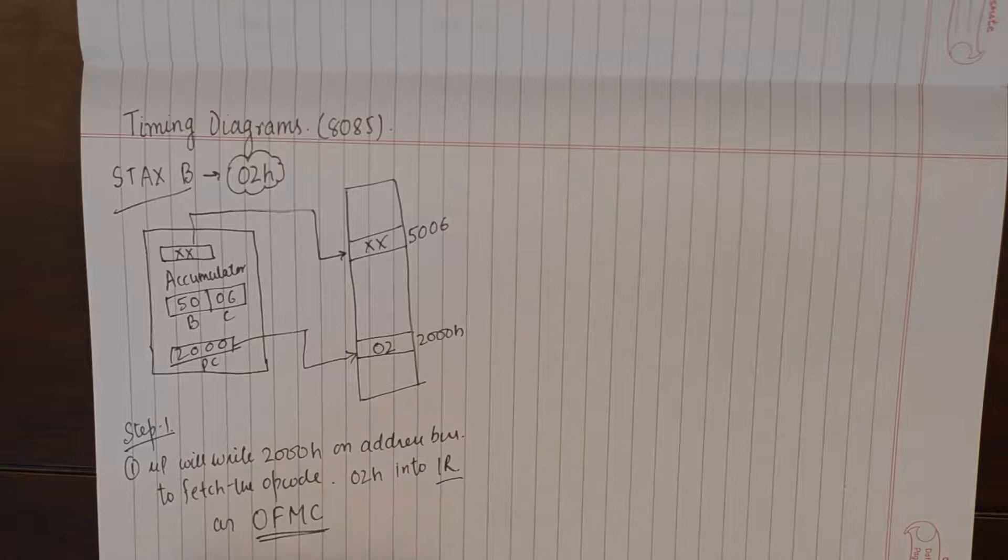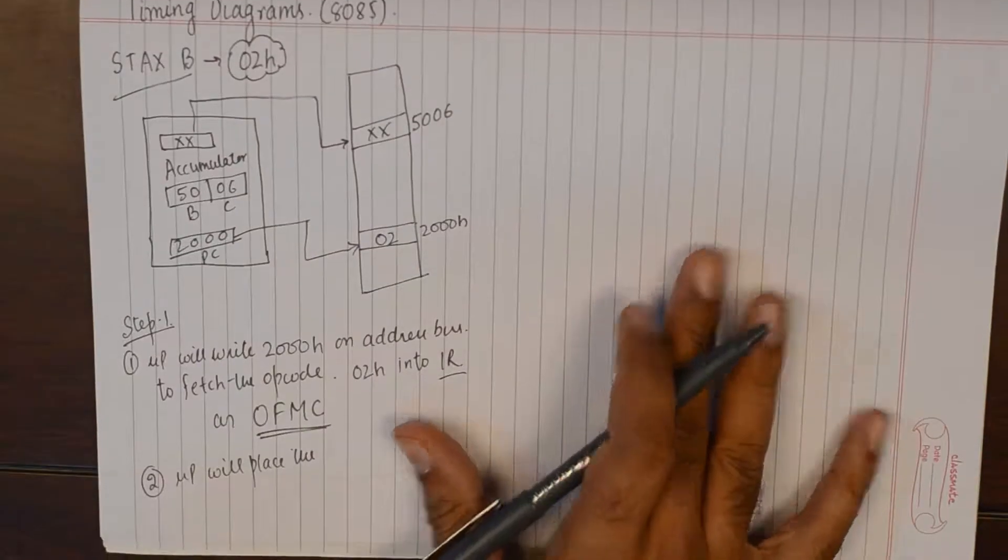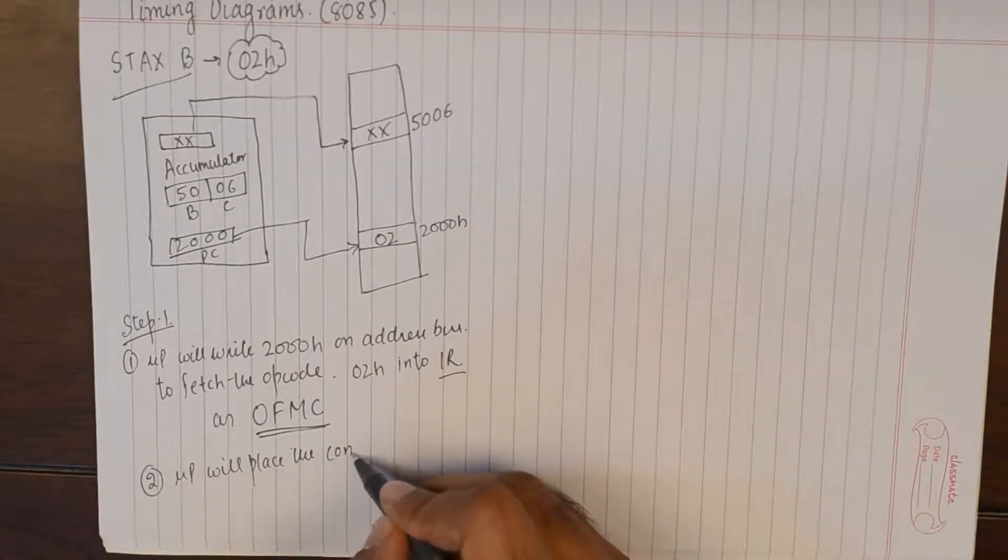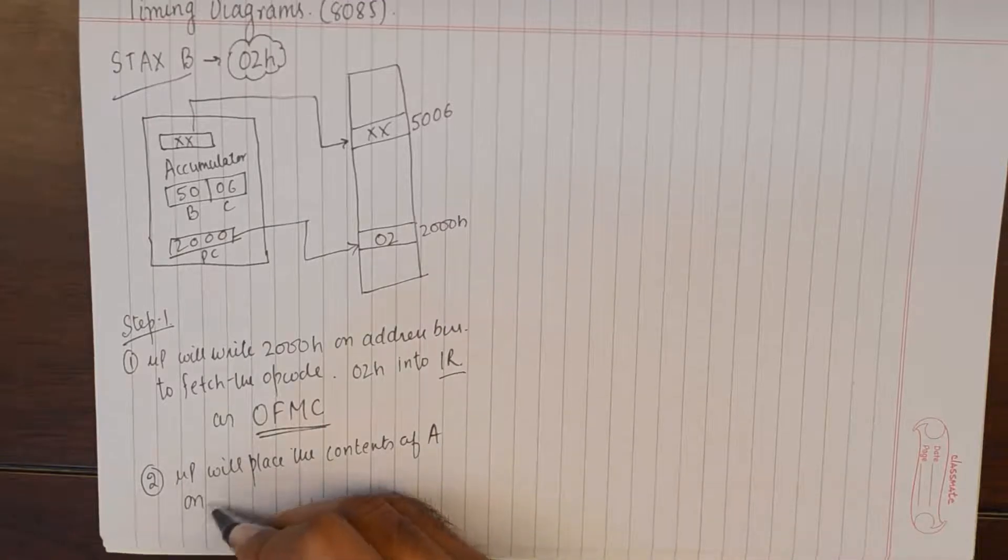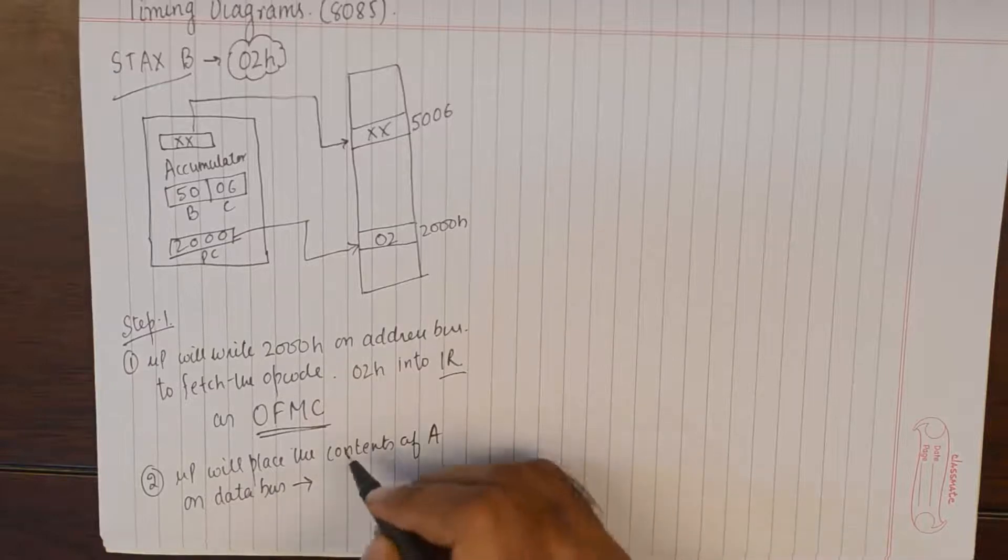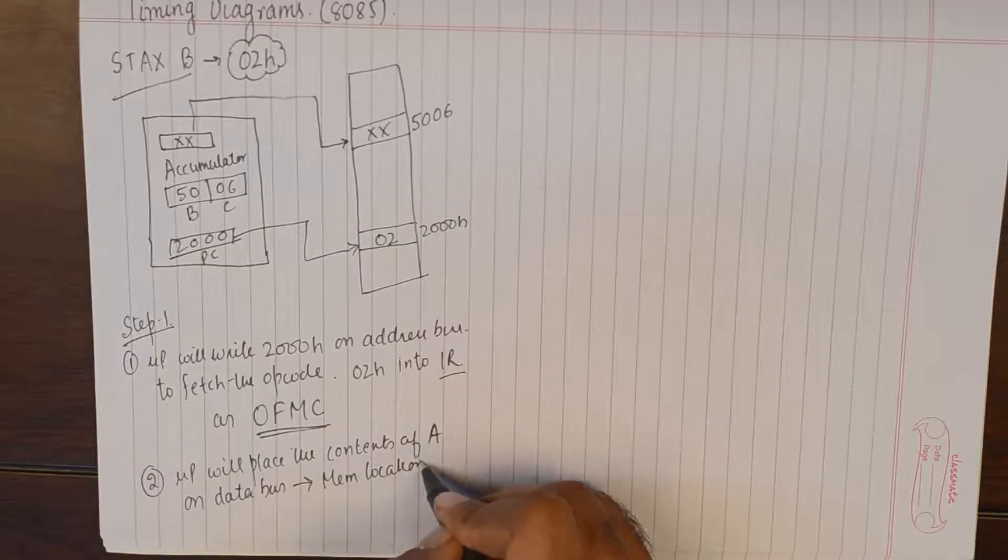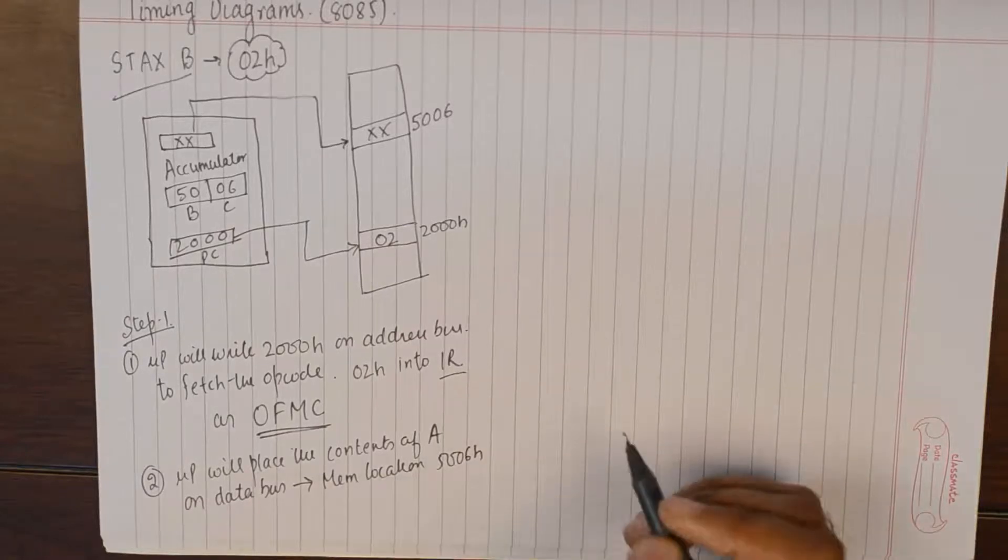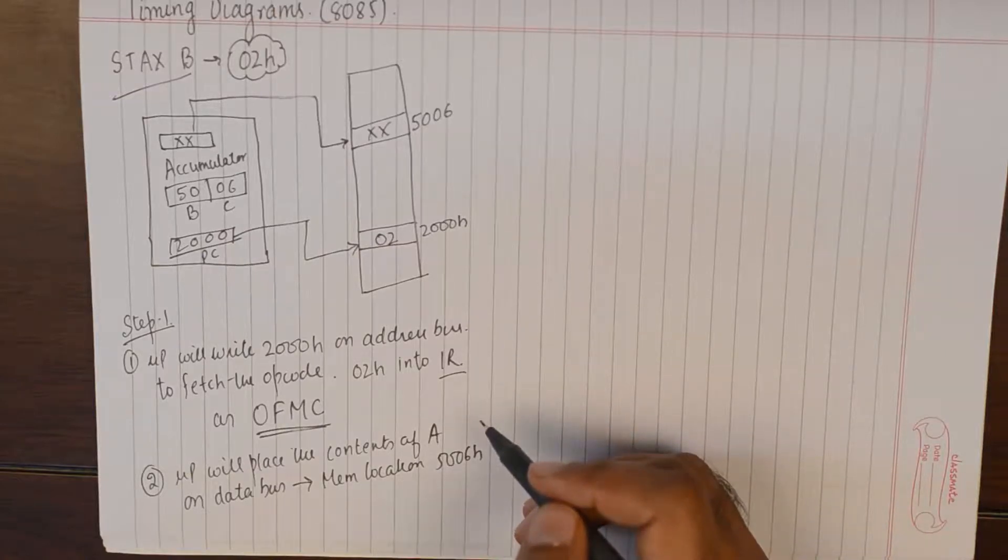And of course in the second step microprocessor will place the contents of accumulator on data bus and it will send it to the memory location 5006 which is an arbitrary value that we have put into the register BC.